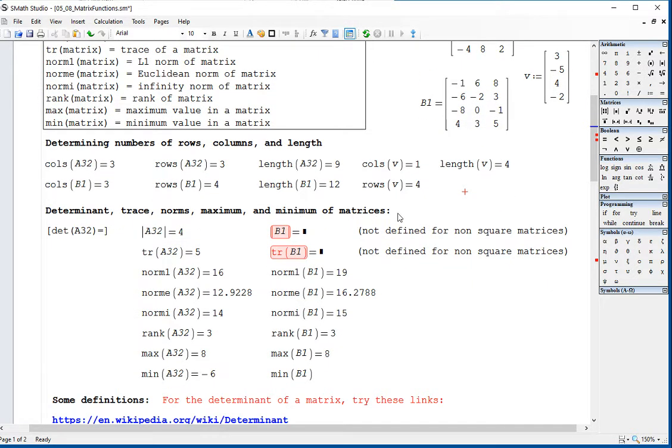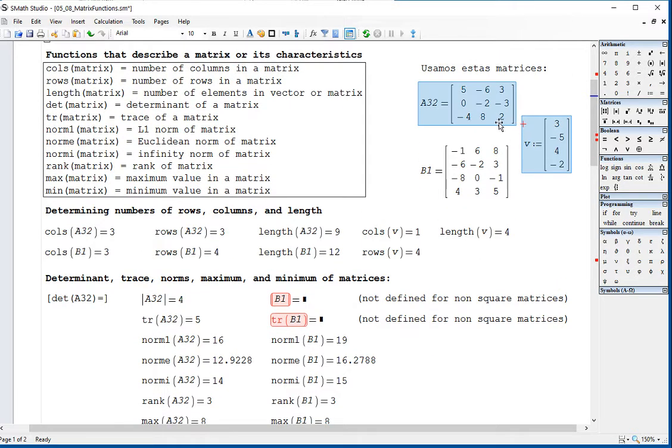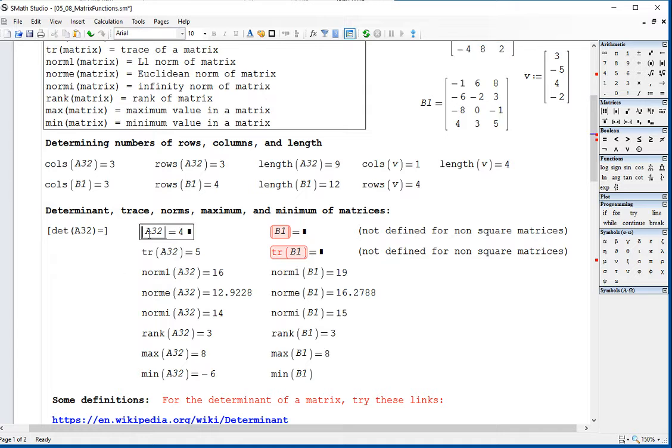Okay, some functions that produce quantities that are related to linear algebra are the following. The function determinant, DET, calculates the determinant of a matrix. That function is only defined for square matrices, so the determinant of A82 is equal to four. Or to type that, you have to type as indicated here in brackets, DET of A82 equals. Or you can click in here and go to the matrix and select this second icon and enter the name of the matrix there and try to calculate the determinant.